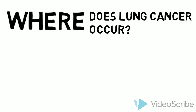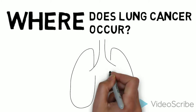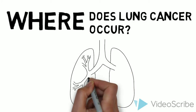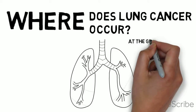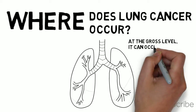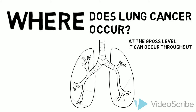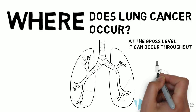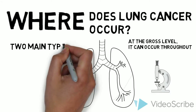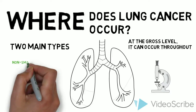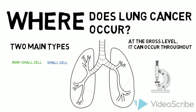Where does lung cancer specifically occur? We will discuss the macro and micro anatomy of lung cancer in relation to the different types. At a gross level, lung cancers can occur in various locations of the lung. Microscopically, each type of cancer has characteristic histological features which aid in differentiation. Lung cancer is commonly divided into two main groups: non-small cell lung cancer and small cell lung cancer. The differentiation of these types is important for diagnosis, management, and prognosis.